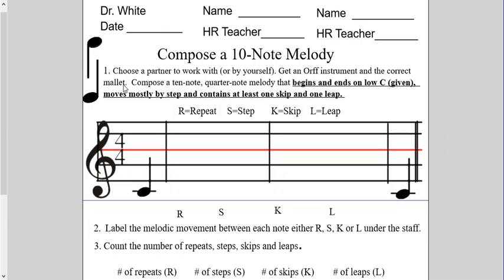The assignment says: choose a partner to work with, or you can work by yourself. Get an Orff instrument with the correct mallet and compose a 10 quarter-note melody that begins and ends on low C. We already have low C given — so I only need to compose eight notes. It begins and ends on low C and moves mostly by step, containing at least one skip and one leap. That'll make it interesting — let's get started.